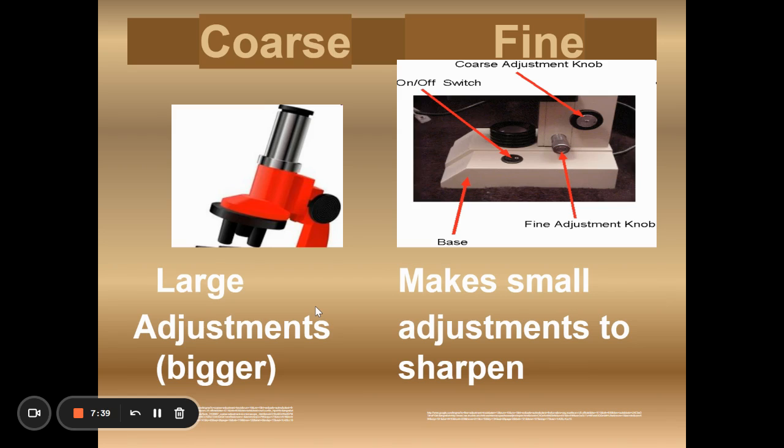Once you get your lenses close to your specimen, then it's time to sharpen the image. So when you look at it, it might be fuzzy. If it is fuzzy, you can use the tiny little knob there, the fine adjustment knob to sharpen the image. If you use the fine adjustment knob and it's still blurry, then you'll have to readjust using your coarse adjustment knob and start over again.